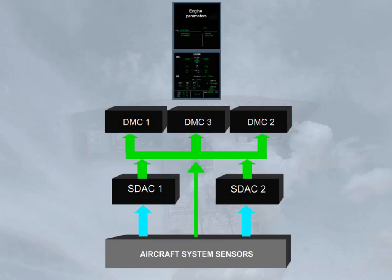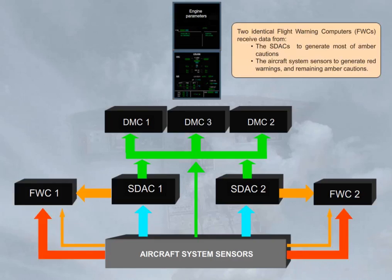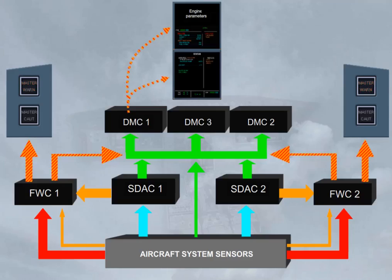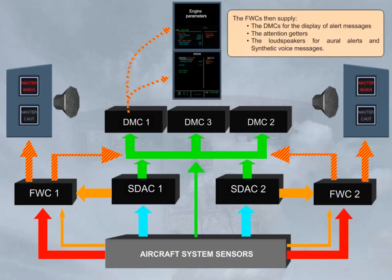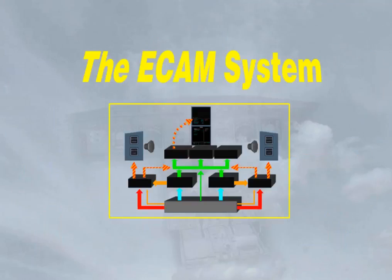Two identical Flight Warning Computers (FWCs) receive data from the SDACs to generate most amber cautions, and from the aircraft system sensors to generate red warnings and remaining amber cautions. The FWCs then supply the DMCs for the display of alert messages, the attention getters, and the loudspeakers for aural alerts and synthetic voice messages. All the components shown can be collectively called the ECAM system. We will study the use of the ECAM system in a separate module.